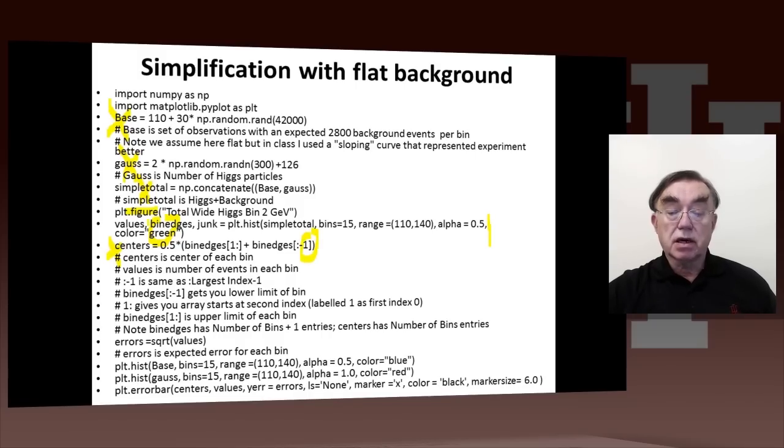The minus 1 corresponds to running Python index from 0 to the upper index, which is 30 minus 1. And so this thing here, centers, actually gives you the center of each of the bins. It's an array of dimension 30 in this case here.